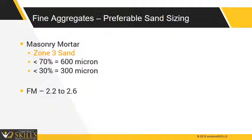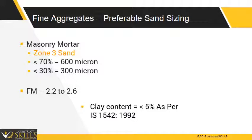Sand should be properly graded. For masonry mortar, zone 3 sand is used, where the grading falls outside the limits of the grading zones of sieves other than 150, 300 and 600 micron sieves by a total amount not exceeding 5%. It shall be regarded as falling within the grading. Fineness modulus of sand is between 2.2 to 2.6 for masonry mortar, and clay content should be less than or equal to 5% as per IS 1542:1992.